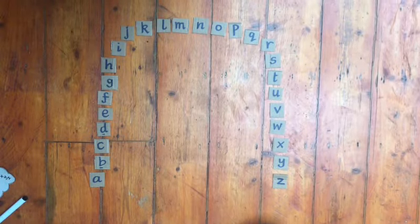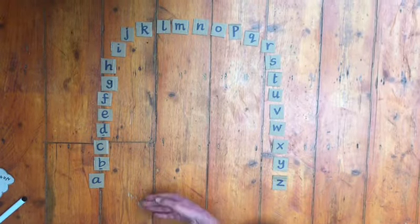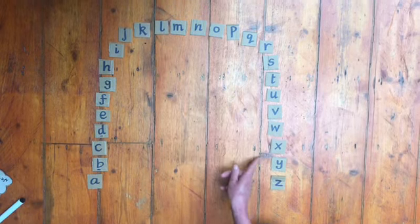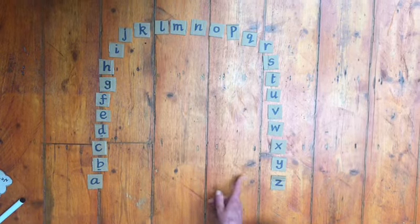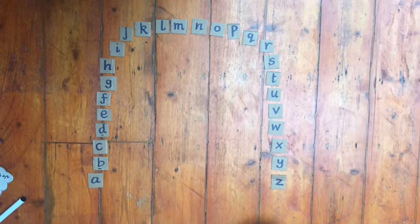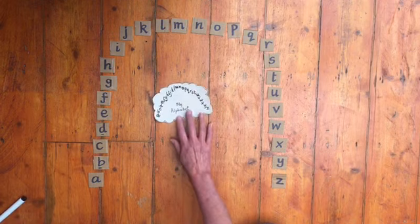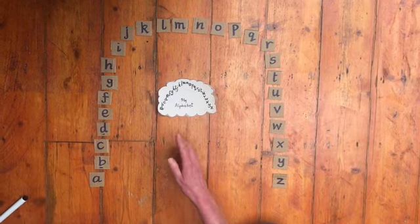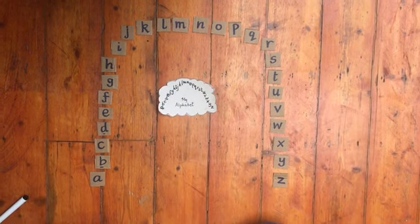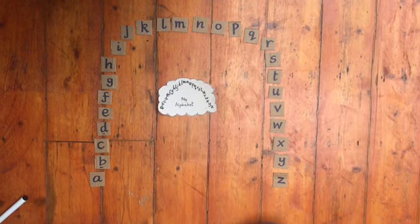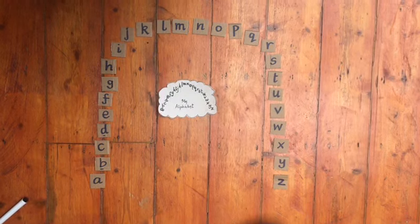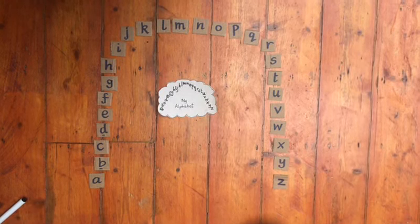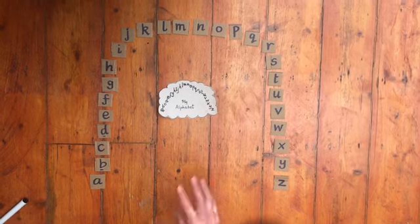First, ask your child to lay out their alphabet tiles in alphabetical order. Remember, they may need an alphabet strip to help. Also, can I remind you there is a video with ideas for developing alphabet skills in the Parents and Carers section of our website.